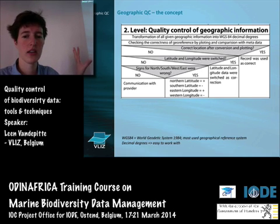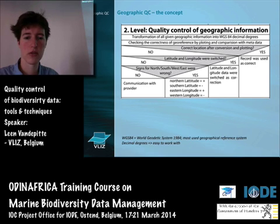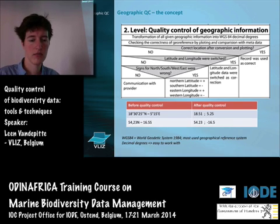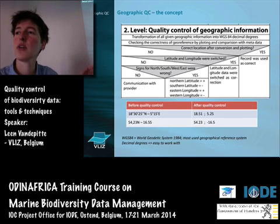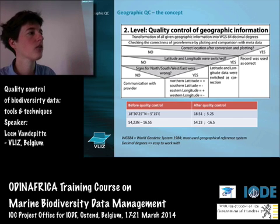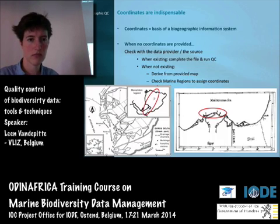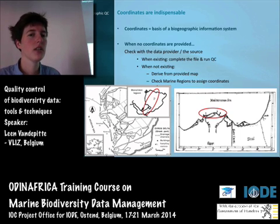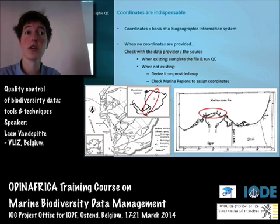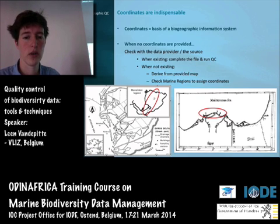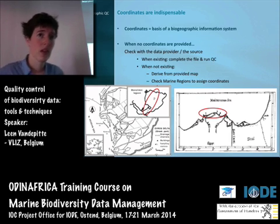Just some examples without going into detail since Mike already covered this thoroughly: before quality control, you might have coordinates in degrees-minutes-seconds format. What you need is decimal degrees, so you have to recalculate to get a decimal number. Coordinates are indispensable for AfReMaS, OBIS, or any biogeographic information system. When coordinates are missing, it's important to check back with your data provider to see if they have them or at least understand what's going on.